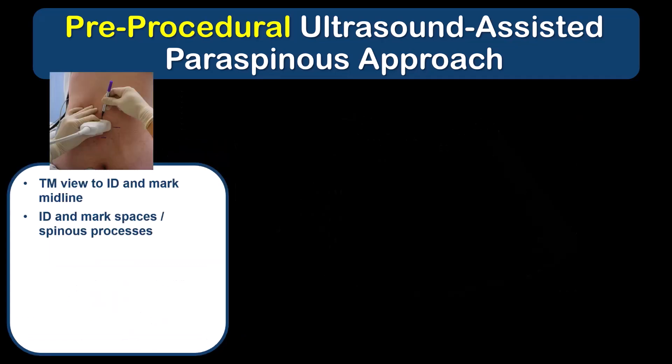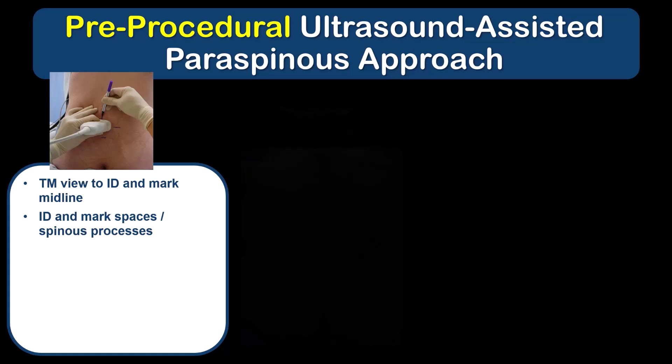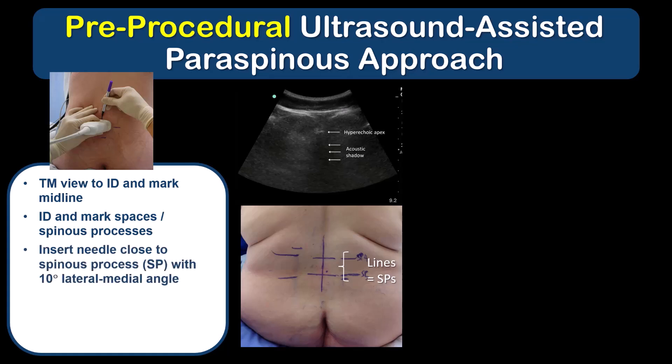I then identify and mark the midline using the transverse midline view, and either mark the intervertebral spaces or, if they are not visible — as in obese patients — I mark the spinous processes. I then perform the procedure as I would have done with a landmark-guided approach, inserting the needle no more than 0.5 to 1 cm lateral to the spinous process or the midline marked on the skin, and 0.5 to 1 cm caudal to the line that marks the interspace I'm interested in.